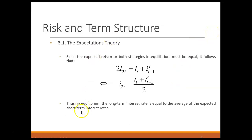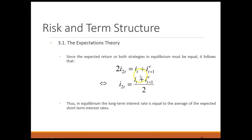No arbitrage requires that both strategies yield the same expected interest. Solving for the long-term rate, I_{2T} equals the short-term rate today plus the expected short-term rate tomorrow, divided by two — which is simply the average of these two rates. That is what the expectations theory states: if investors care only about what pays higher interest rates, long-term interest rates in equilibrium must be an average of short-term rates.